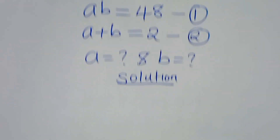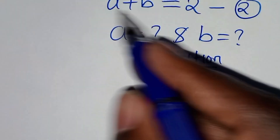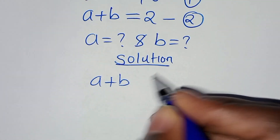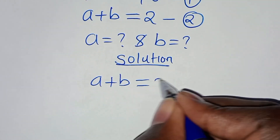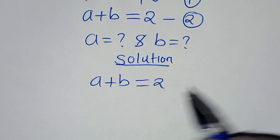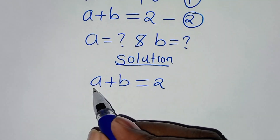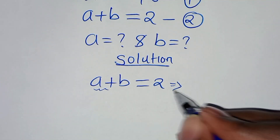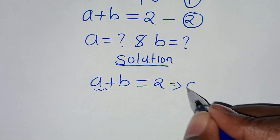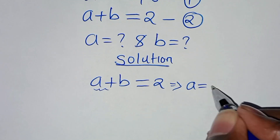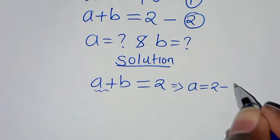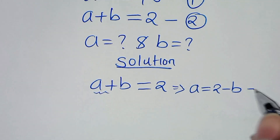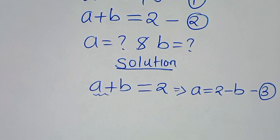Now, from equation 2, which is a plus b equals 2, let's make a the subject of the formula. This implies that a is equal to 2 minus b — let's call this equation 3.